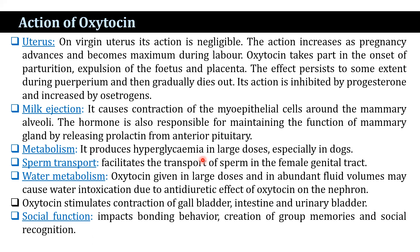On the mammary gland, oxytocin causes contraction of myoepithelial cells around the mammary alveoli. The hormone is also responsible for maintaining the function of the mammary gland by releasing prolactin from the anterior pituitary. It produces hyperglycemia in large doses, especially in dogs. It facilitates transport of sperm in the female genital tract. In large doses with abundant fluid intake, oxytocin may cause water intoxication due to its antidiuretic effect on the nephron. Oxytocin stimulates contraction of the gallbladder, intestine, and urinary bladder, and also impacts bonding behavior, creation of group memories, and social recognition.